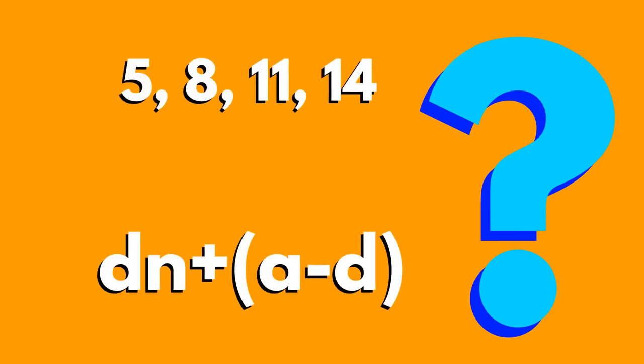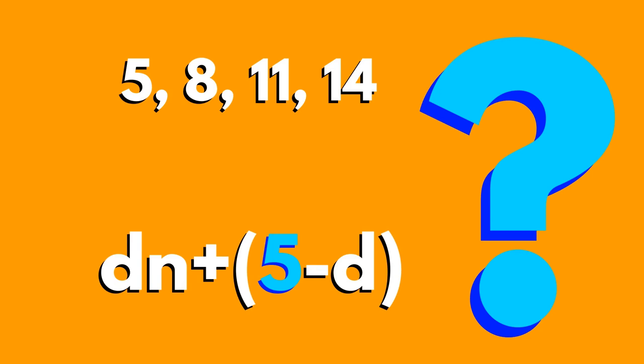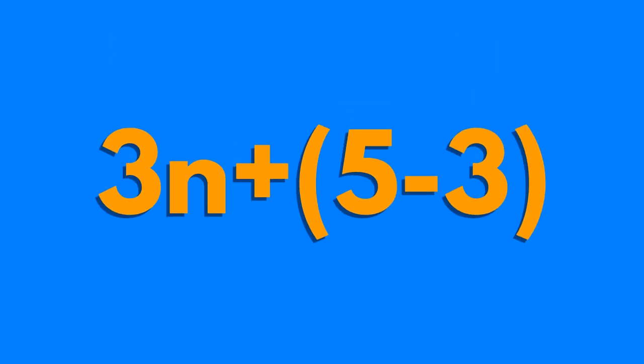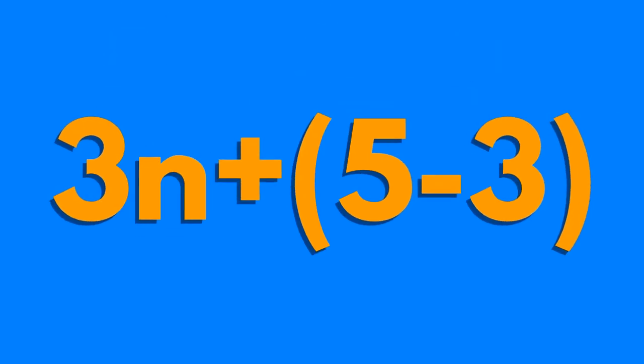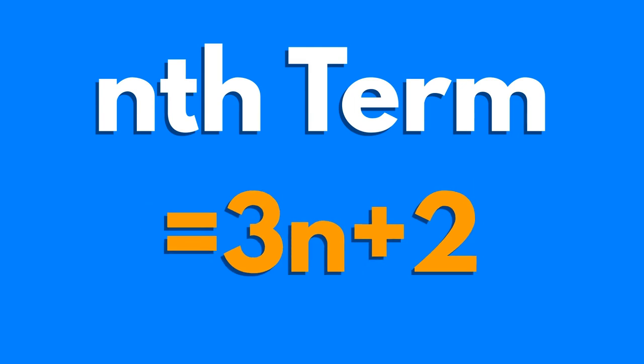Can you find the nth term for this sequence? The first term is 5, so A equals 5. And the common difference is 3, so D equals 3. Using the formula, this gives 3n plus 5 take away 3, so the nth term is 3n plus 2.